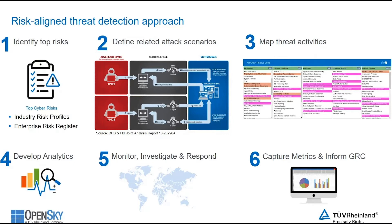That could be in the form of something very specific to the organization or something that's more industry-aligned — an industry risk profile. In either case, we identify the top risks, then we define the most likely attack scenarios related to those risks. We don't have to define every possible attack scenario — what we want to do is understand what the top attack scenarios are that we're worried about. From there, we can look in detail at the specific threat activities related to those attacks that are aligned to our key risks, so that we're in a position to develop analytics for each of the threat activities across the attack chain.